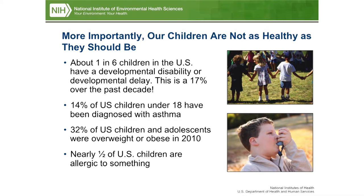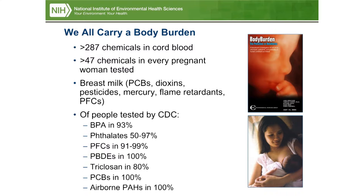We all carry a body burden. We have 287 chemicals in cord blood; over 47 chemicals were found in every pregnant woman tested. We still have PCBs and dioxins in breast milk today, as well as pesticides, mercury, flame retardants, and PFCs. Measured by CDC: 93% have BPA; 50-97% have phthalates depending on age and ethnicity; 91-99% have PFOA from non-stick pans; 100% have flame retardants; 80% have triclosan; 100% have PCBs; and airborne polyaromatic hydrocarbons are measured in 100% of the population assessed.